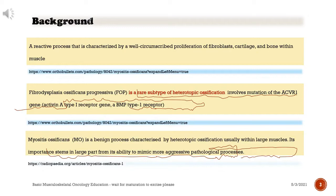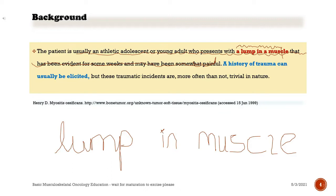Myositis ossificans is a benign process characterized by heterotopic ossification usually within large muscles. Its importance stems from its ability to mimic more aggressive pathological processes. The patient is usually an athletic adolescent or young adult who presents with a lump in a muscle that has been evident for some weeks and may have been somewhat painful. A history of trauma can usually be elicited, but these traumatic incidents are, more often than not, trivial in nature.